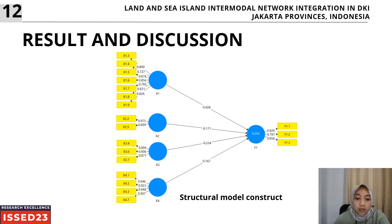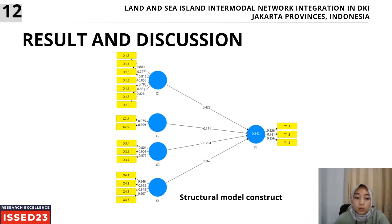This is the result. From X1, we use indicators 3 through 9, cutting the port and wharf indicators. For X2, we use two indicators: existing switch mode time and existing waiting time. For X3, we use three indicators: access, service officer, and security guard. For X4, we use four indicators, cutting three: nursing mother facilities, prayer room, and health room. For Y1, we use all indicators, assessing whether the existing system is integrated or not.